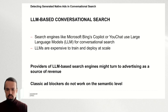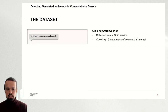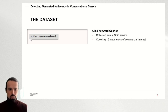As a dataset for this type of classification task currently does not exist, we created a new dataset by envisioning what such an advertising system might look like. The starting point for that are keyword queries that we obtained from an SEO service. These queries come from one of ten meta topics, and these meta topics are commercial fields such as banking or gaming — with gaming being the example here on the slides.